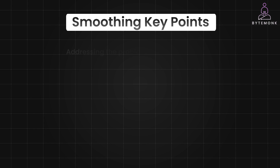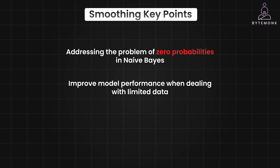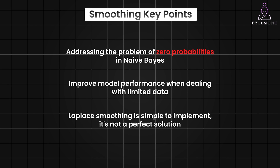Laplace smoothing is a practical technique for addressing the problem of zero probabilities in Naive Bayes and other models, and it helps improve model performance when dealing with limited data. While Laplace smoothing is simple to implement, it's not a perfect solution, and other techniques may be more appropriate in certain scenarios. It's important to understand the trade-offs of each technique and choose the one that best suits your specific scenario.